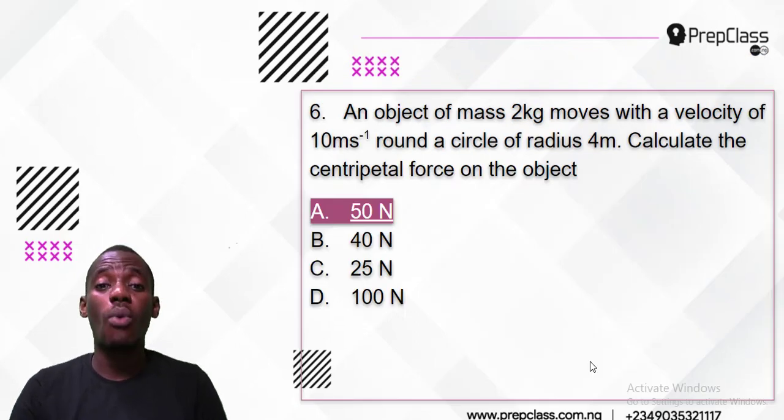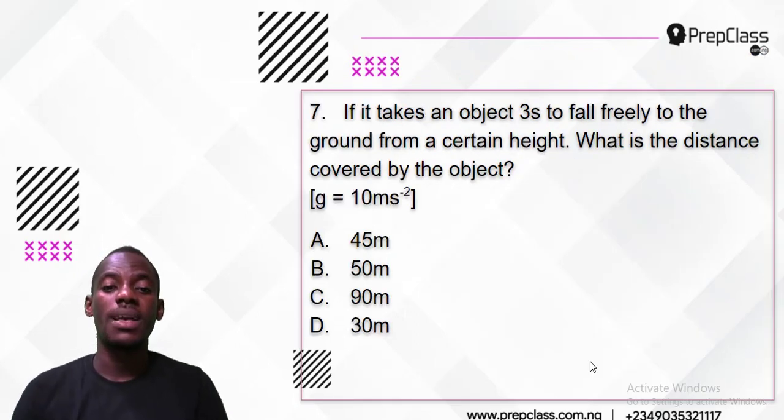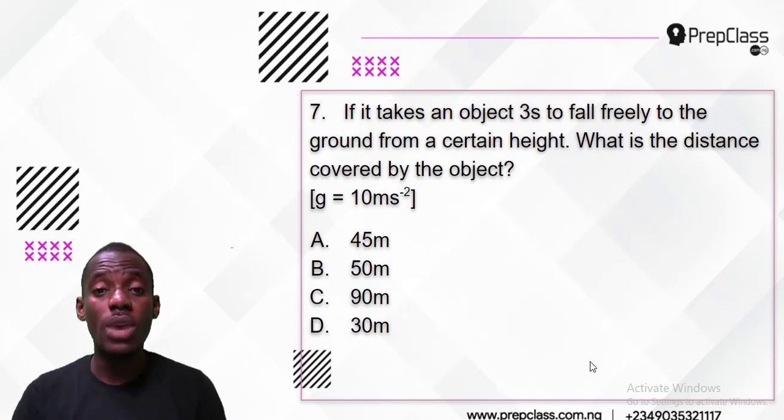Question 7: If it takes an object 3 seconds to fall freely to the ground from a certain height, what is the distance covered by the object? Do you have any idea? This is actually a motion question.